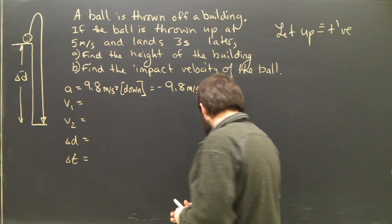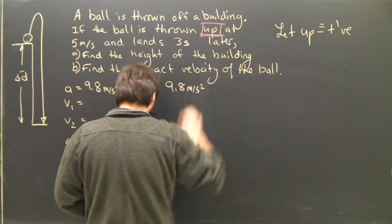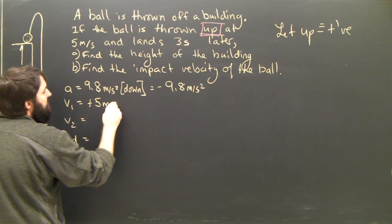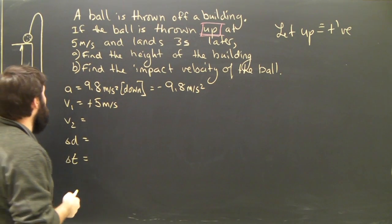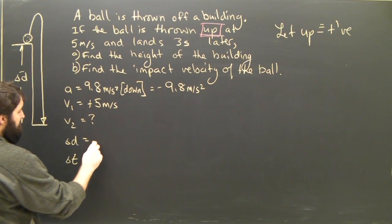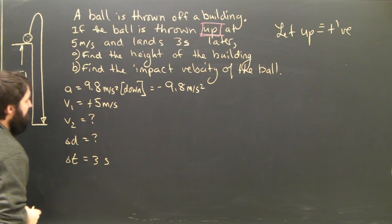V1 is up. If you look at the question, the ball is thrown up. So V1 is positive 5 meters per second. It's a good habit to always get in the habit of putting positives or minuses. V2, we don't know. Delta D is the height of the building. It's what we're trying to find. And the time is 3 seconds.